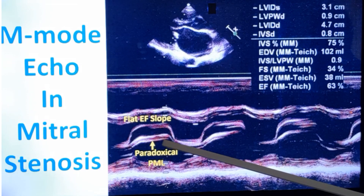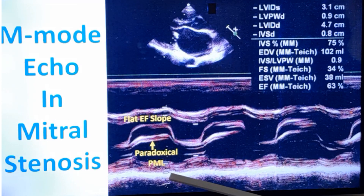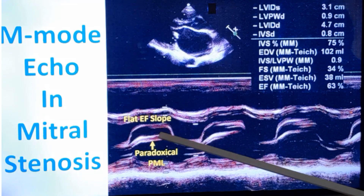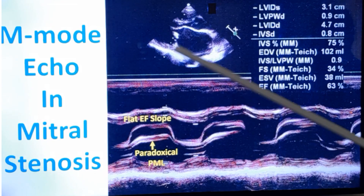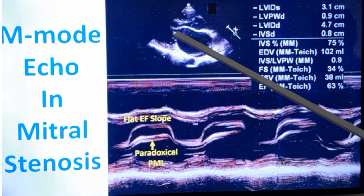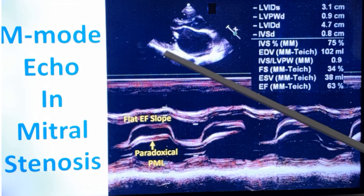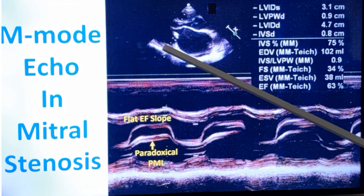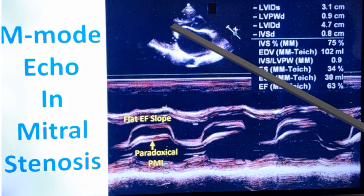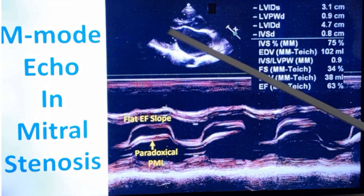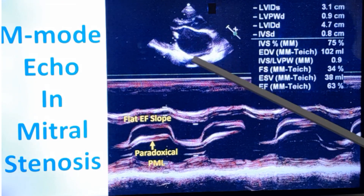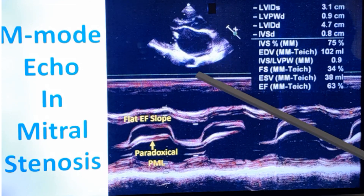You can see the paradoxical anterior motion of the posterior mitral leaflet. The separation between the leaflets is reduced due to mitral stenosis. Normally, in diastole, the posterior leaflet moves posteriorly toward the posterior left ventricular wall, and the anterior leaflet moves anteriorly near the septum, creating a very wide mitral valve opening — but this is not seen here due to mitral stenosis.